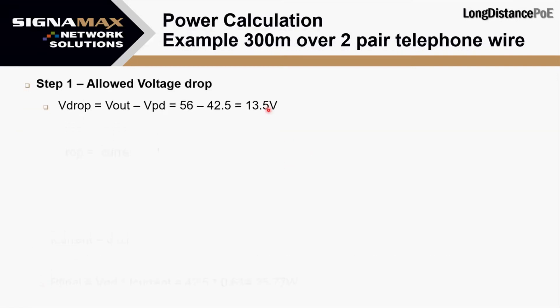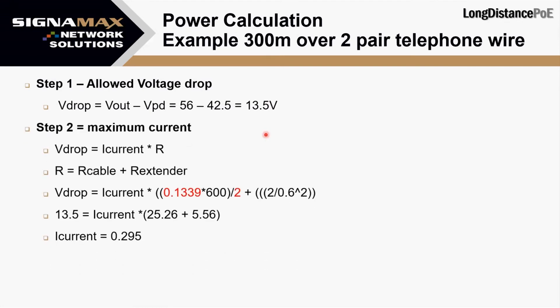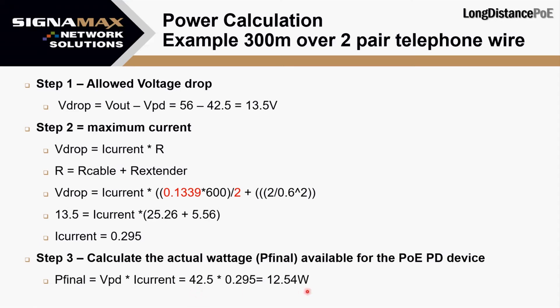Let's do another calculation — 300 meters over a two-pair telephone wire. The allowed voltage drop is the same 13.5 volts. The telephone wire resistance per meter is much higher than Category 6 — basically double. We multiply by 600 for round trip, but can only divide by two since it's two-pair. That gives a maximum current of only 0.295 amps, yielding just 12.52 watts. It's usable for low-powered devices, but compared to Category 6 at 500 meters giving 25 watts, we're getting half the power at less than half the distance. The cable medium is critically important.